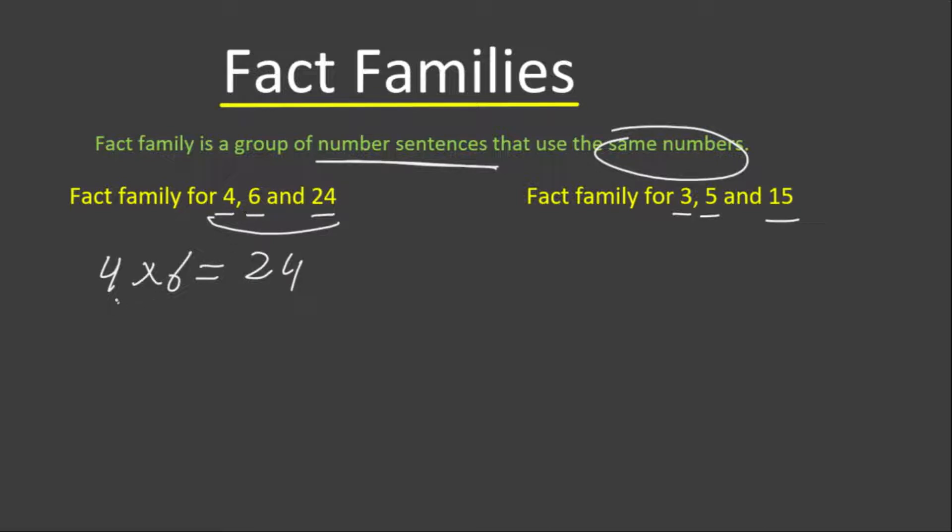Now if we divide 24, which is the product of 4 and 6, by one of the factors, let's write 24 divided by 4. 24 divided by 4 will give us 6. This means if we divide the product by one of the factors, the answer will be another factor.